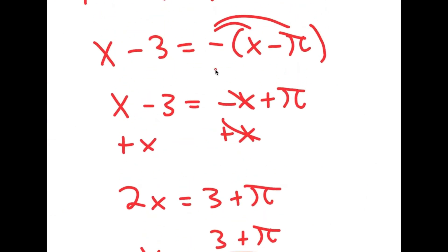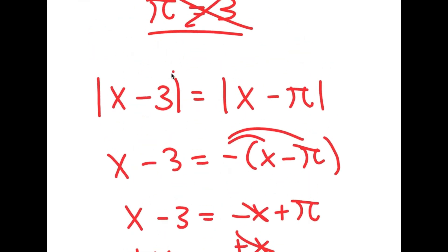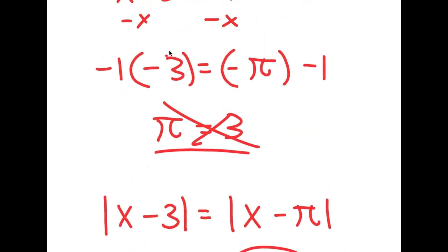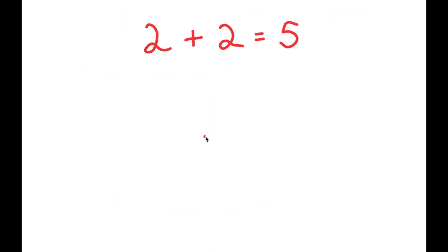So there you have it. That is something really important to know: the square root of a square isn't just the normal version — it's the absolute value of that. So in this next video, I'm going to be proving to you guys that 2 plus 2 is equal to 5.